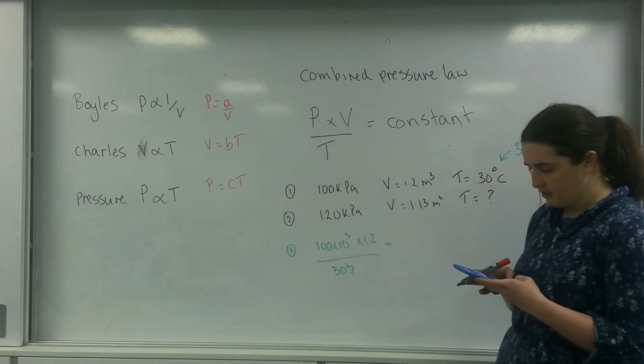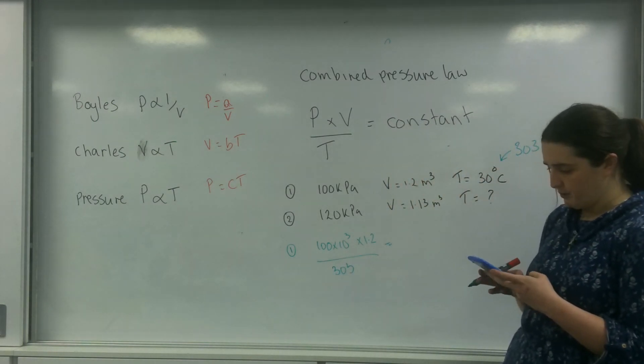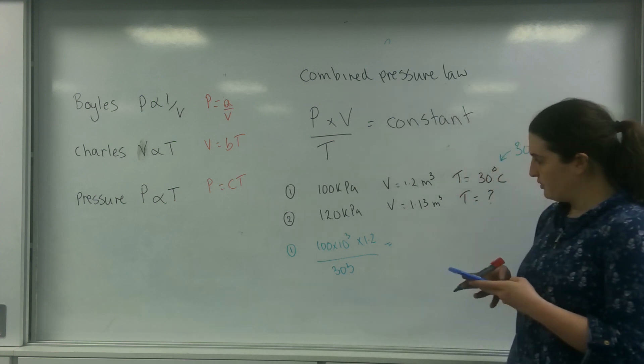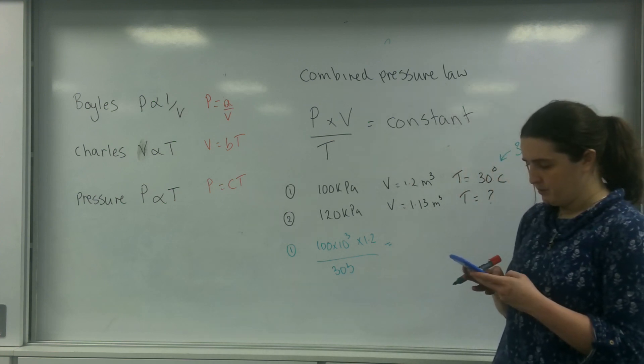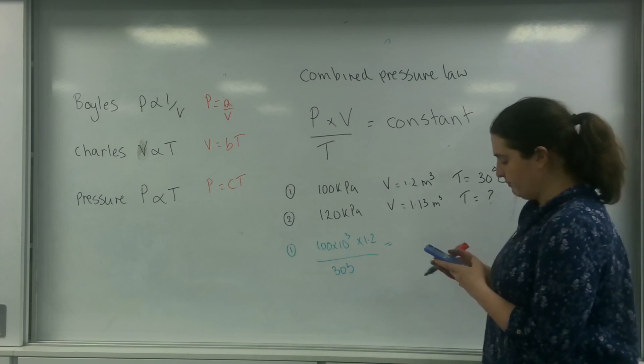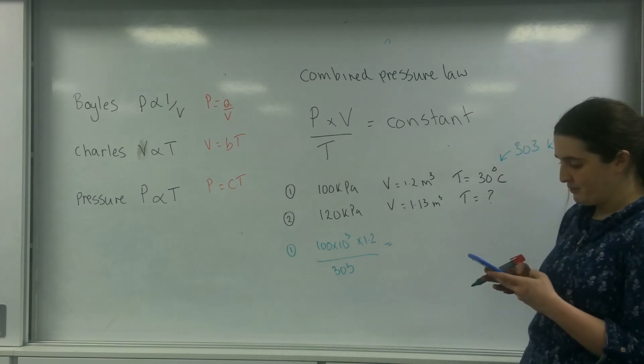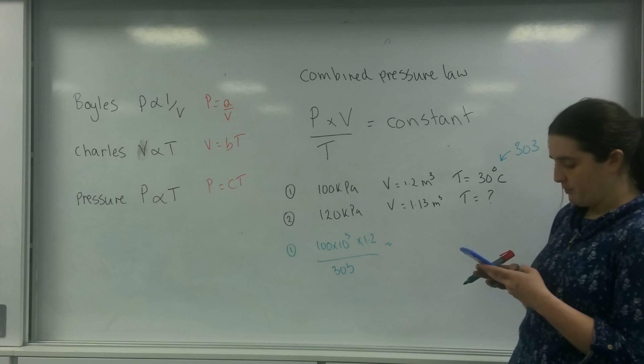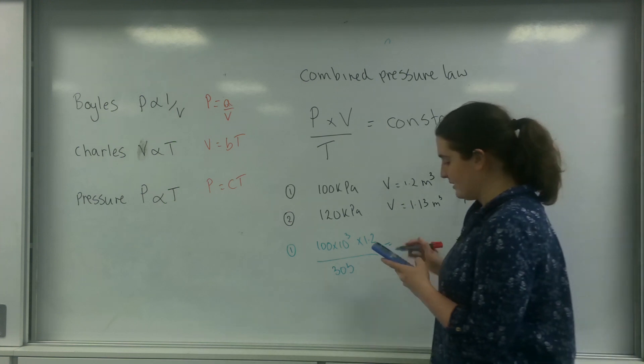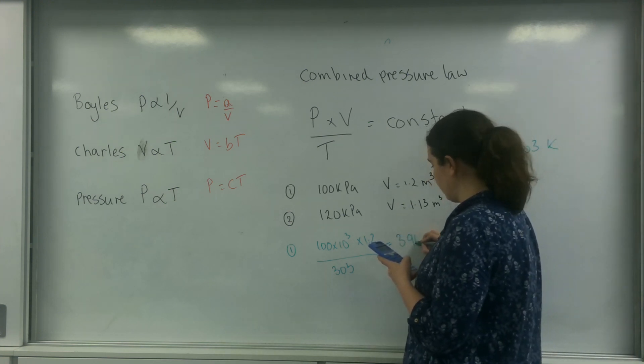So let's put this in: 100 times 10 to the 3 times 1.2 divided by 303 is 396.